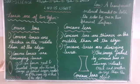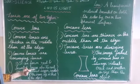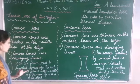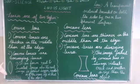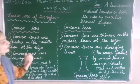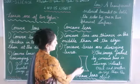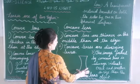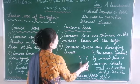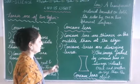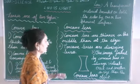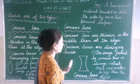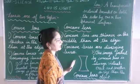What does a convex lens do? It can form a real and inverted image. The real image can be bigger, smaller or of the same size as the object. Now let's look at a concave lens. A concave lens is thinner in the middle and thicker at the edges. A concave lens is called a diverging lens. The image formed by a concave lens is always a virtual image — it cannot be seen on a screen.